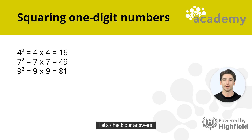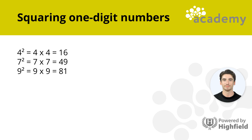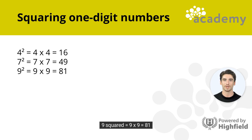Let's check our answers. 4 squared is the same as 4 multiplied by 4, which equals 16. 7 squared is the same as 7 multiplied by 7, which equals 49. 9 squared is the same as 9 multiplied by 9, which equals 81.